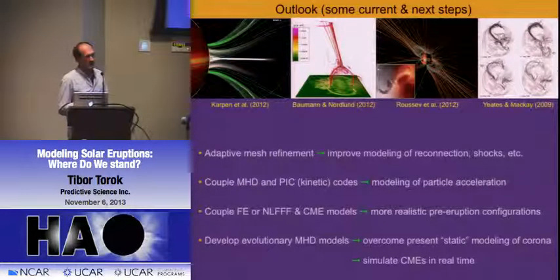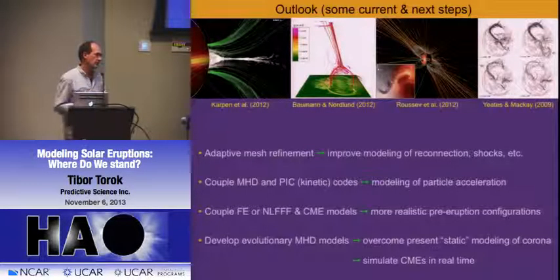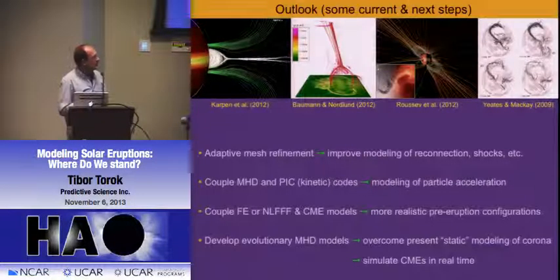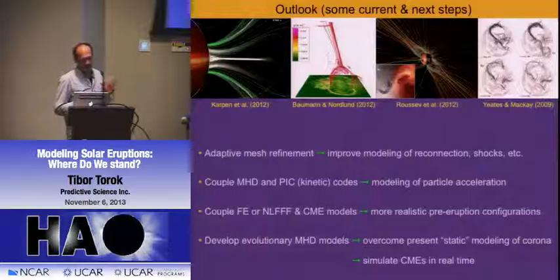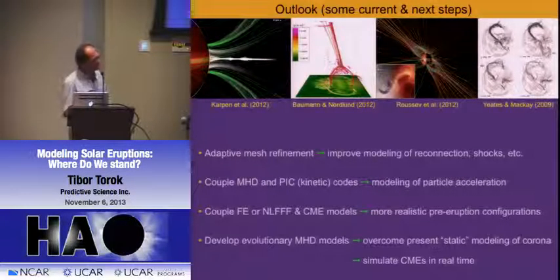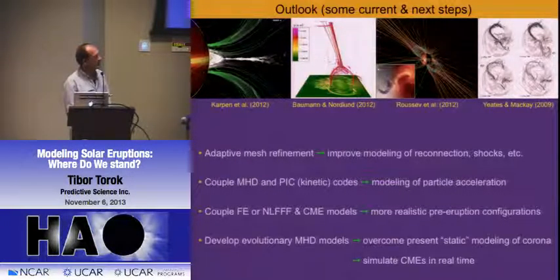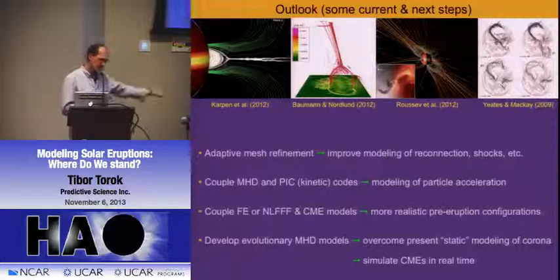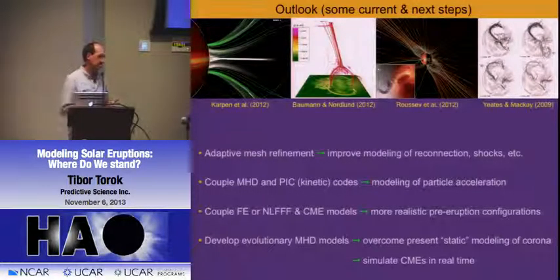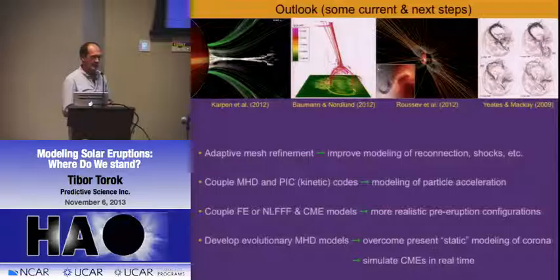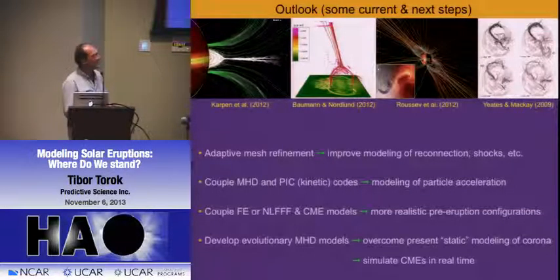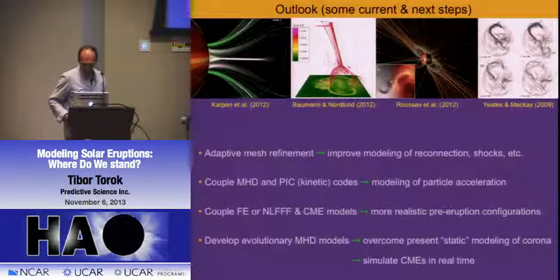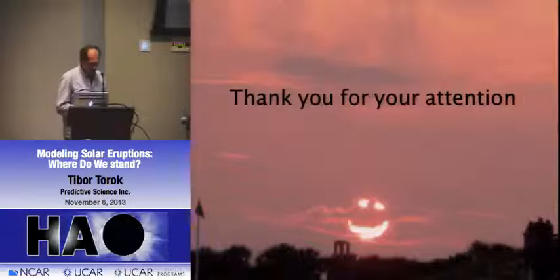Another thing we have to do is work more on evolutionary MHD models. All the simulations shown are for a CME at one particular point in time of the corona—a static corona—but in reality everything is in movement. People have started doing this kind of work, for example Duncan McCabe and Yeates, or Mark Cheung and Fisher. And then the long-term goal is to use these models to simulate CMEs in real time: we see a CME starting, we start the model, and if we're lucky we are done before it hits the Earth—but that's really in the far future. Thank you very much.